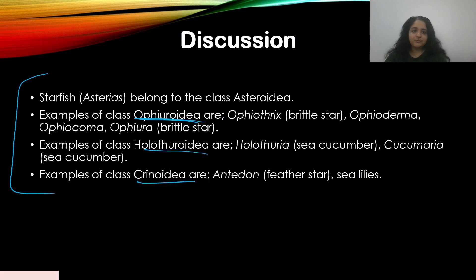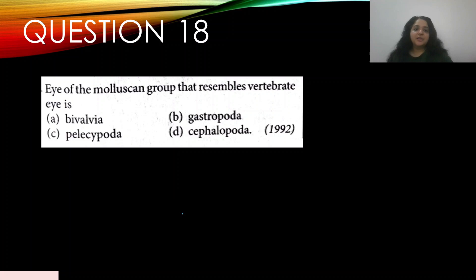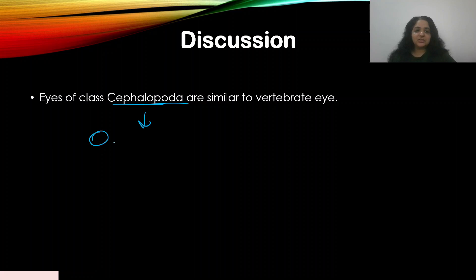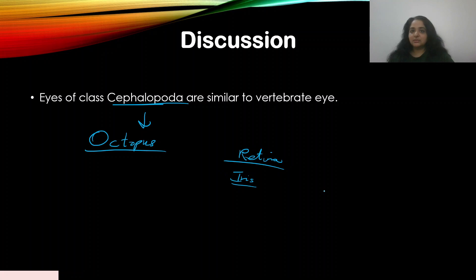Question number eighteen: the molluscan group that resembles the vertebrate eye — appeared in 1992 — A) Bivalvia, B) Gastropoda, C) Pelecypoda, D) Cephalopoda. The answer is D — Cephalopoda. Animals such as octopus belong to this group. Their eye has a retina, nerve fibers, and an iris, making it somewhat similar to the vertebrate eye, though not exactly the same.